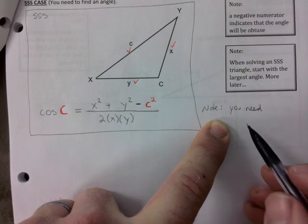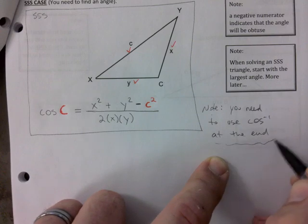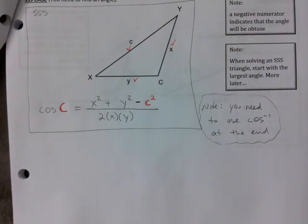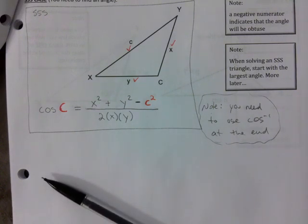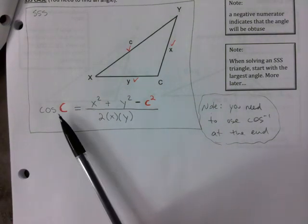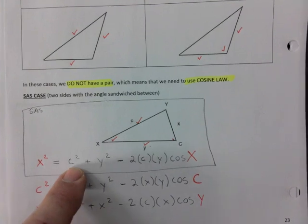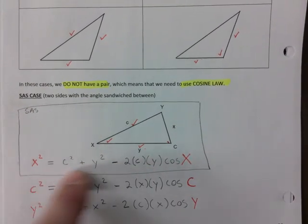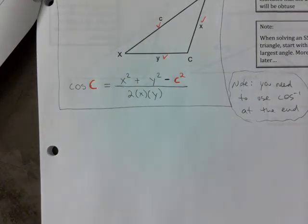Note for later when you study: you need to use cosine inverse at the end. Students forget that — when it's angle time, use the inverse: sine inverse or cosine inverse. This is where sine law and cosine law are very different. Sine law you set up the same way every time — fraction equals fraction equals fraction. Cosine law requires you to know: is it SSS? Use this formula. Is it SAS? Use this formula.